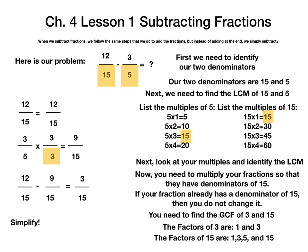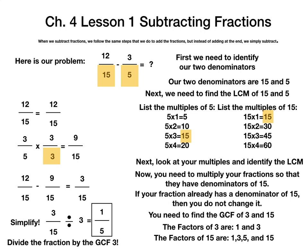Our next step is to divide the fraction by 3. We are going to rewrite our fraction: 3 fifteenths divided by 3. 3 divided by 3 equals 1, and 15 divided by 3 equals 5. So our final answer is going to be 1 fifth. 12 fifteenths minus 3 fifths is equal to 1 fifth.